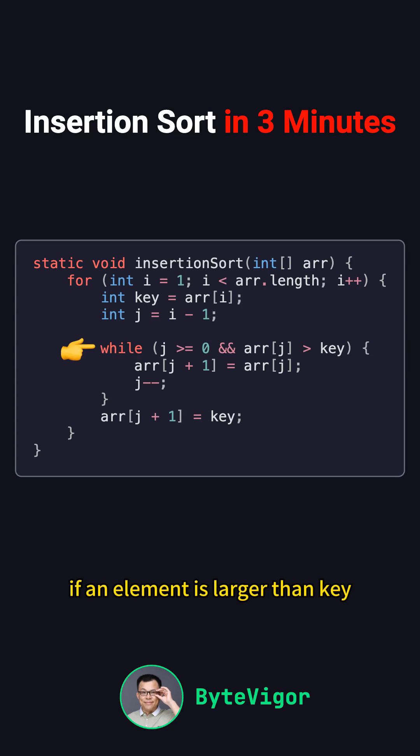If an element is larger than key, we shift it one position to the right. Once we find the correct position for key, we insert it. This process continues until all elements have been sorted.